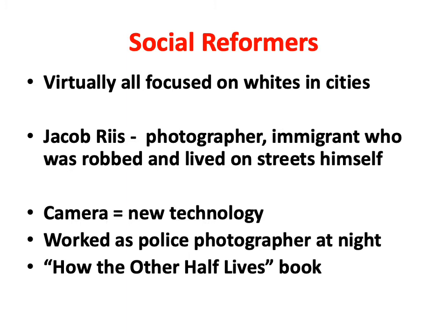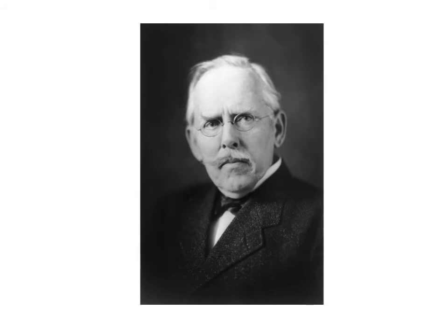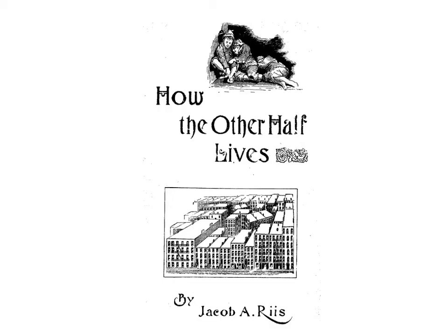Be sure you know the title of the book: How the Other Half Lives. This is a picture of Jacob Riis — a very serious-looking gentleman. This is the first edition of the book. You can see at the top children huddled together, sleeping on the street, and below the tenement buildings where they're all crowded together.